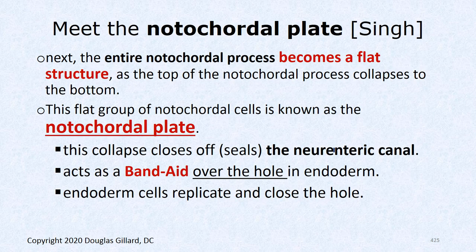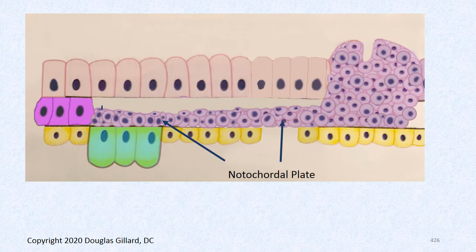Next is the notochordal plate. The entire notochordal process smashes down to the bottom — perhaps to fill the hole — and the cord becomes flat as a pancake, temporarily becoming the notochordal plate. So we went from a solid structure, to a tube, to a tube with a hole, and now everything collapses to form a plate, which closes off the neurenteric canal.